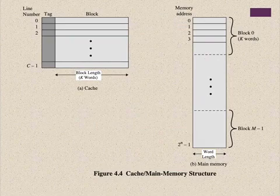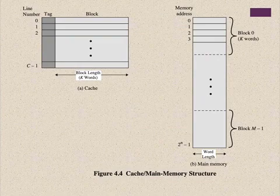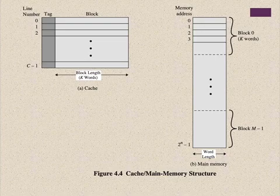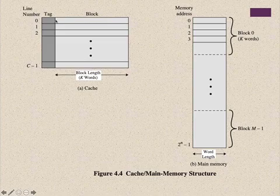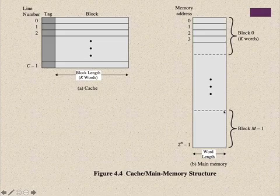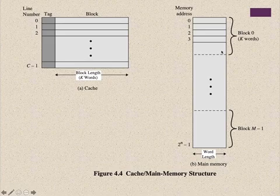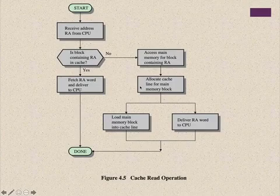Some architectures use only L1 and L2 cache, but most current architectures also use L3 cache to improve performance. In the cache structure, we have a tag, also called a line number. If the cache has size C, we have line numbers from 0 to C-1. Each line represents a block loaded from main memory. As shown in figure (b), these blocks contain groups of bytes or words — a block may have any number of words.